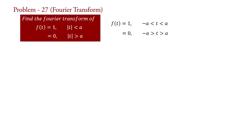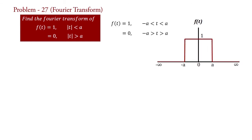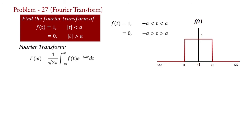If we plot it, it looks like a rectangular pulse. The formula for the Fourier transform is: F(ω) = 1/√(2π) · ∫ from −∞ to ∞ of f(t) · e^(−iωt) dt.